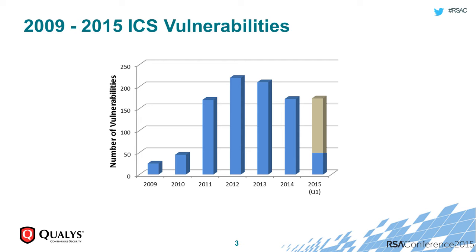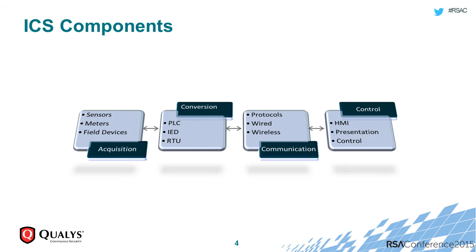If you look at industrial control systems in a little bit of detail, all industrial control systems are different, but there are some similarities. For example, most of them are made of four components, which are basically data acquisition components, data conversion, communication, and control.